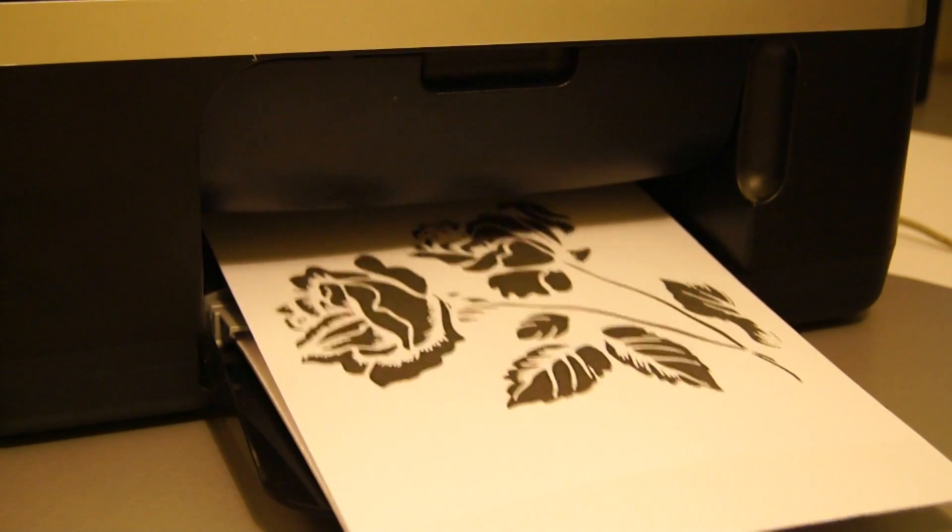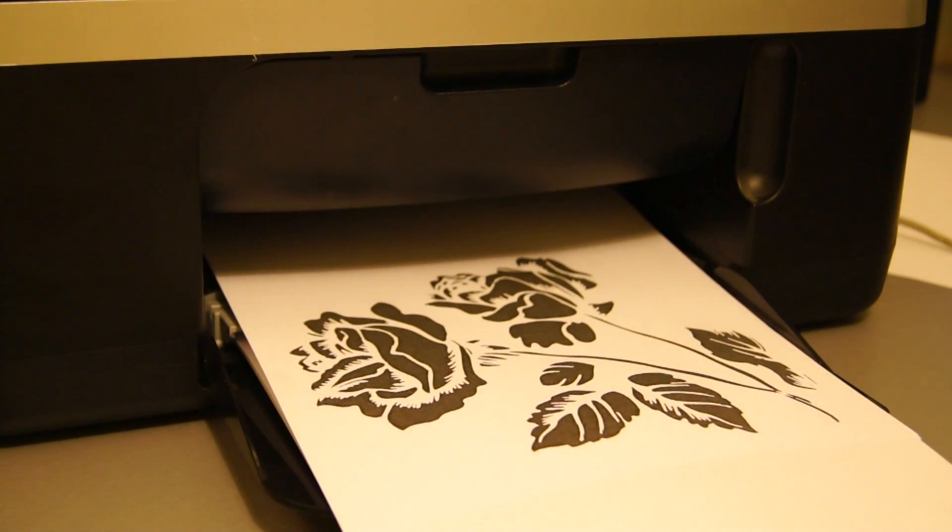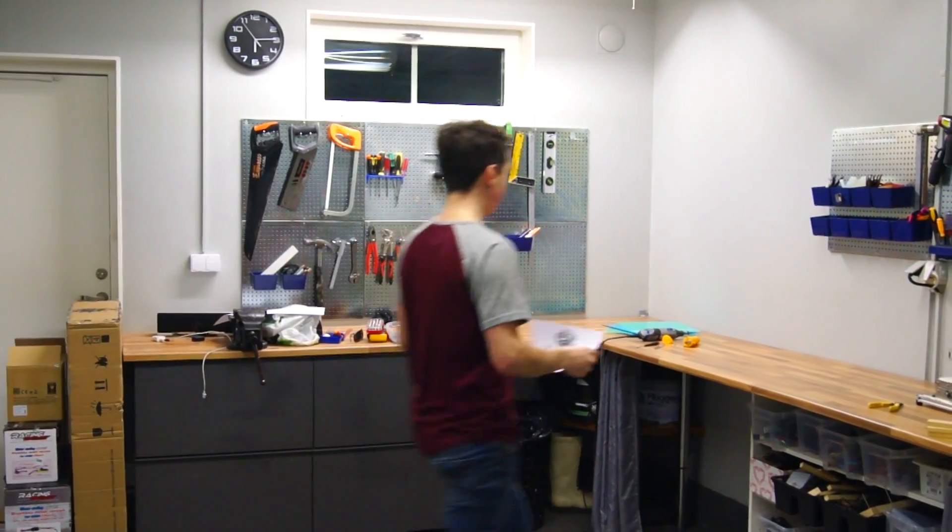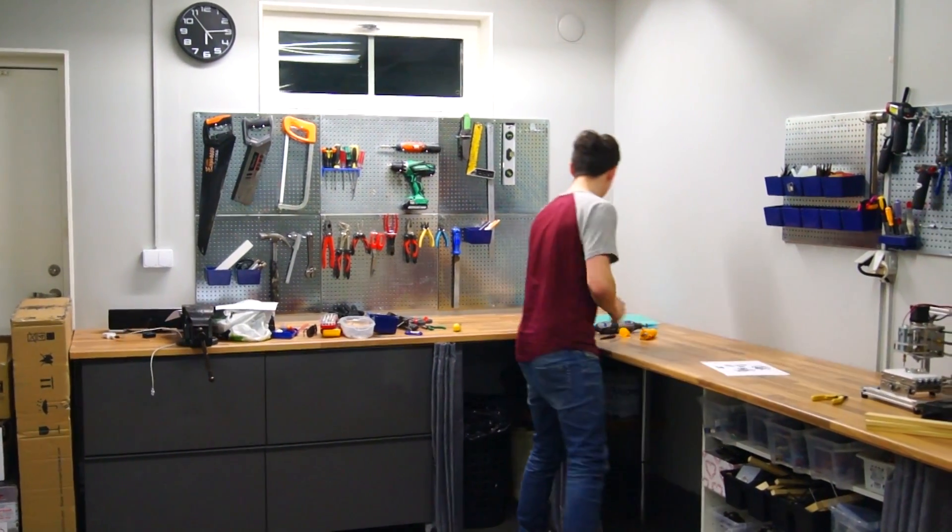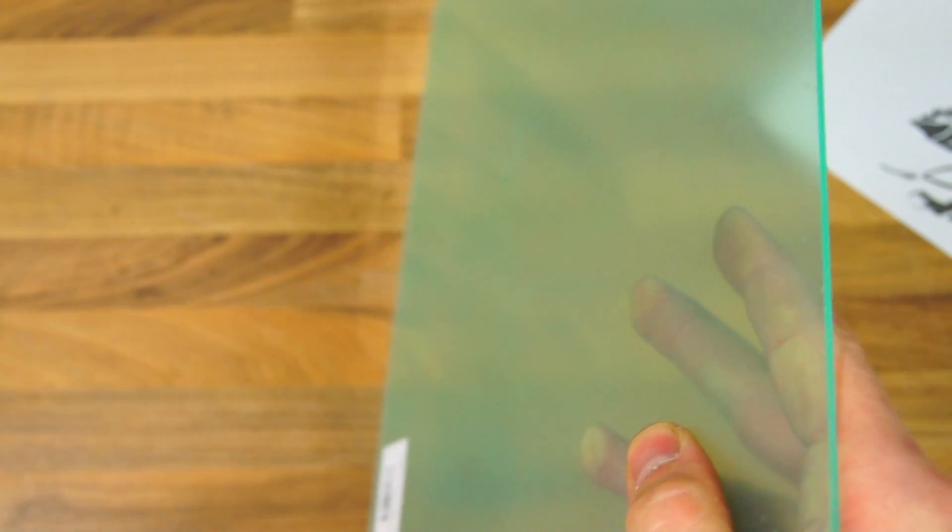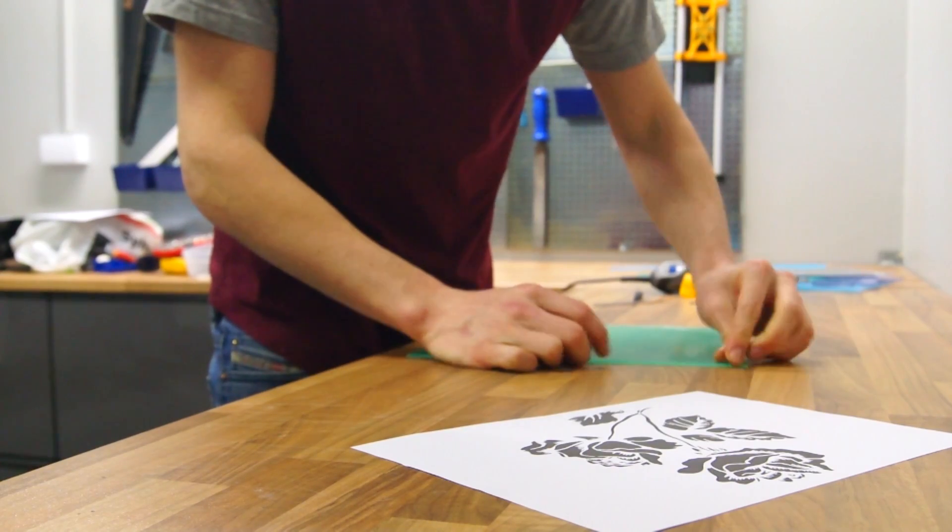The first step is to print out an image and I went with this beautiful looking rose. If you have the option to choose from 4 and 2 millimeter acrylic, definitely go with the 4 millimeter, but I went with the 2 millimeter for my first attempt.